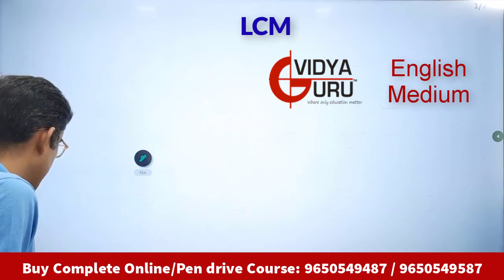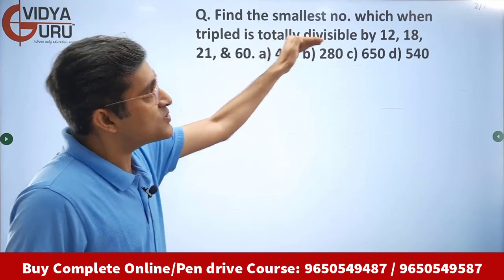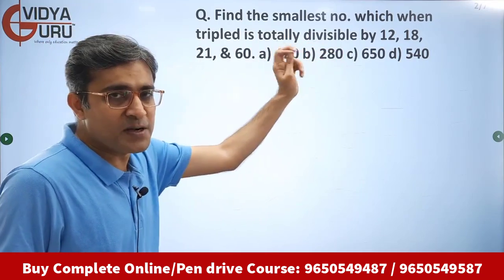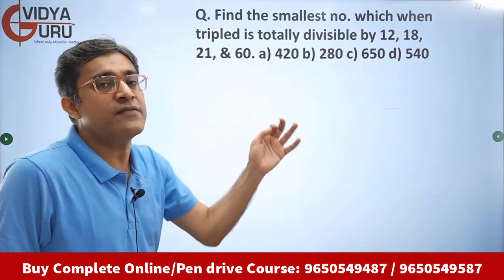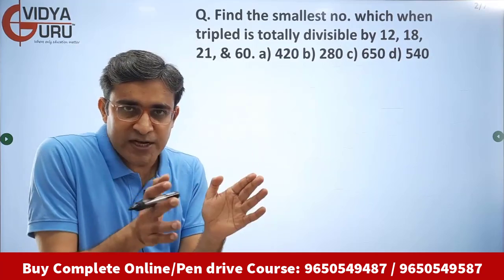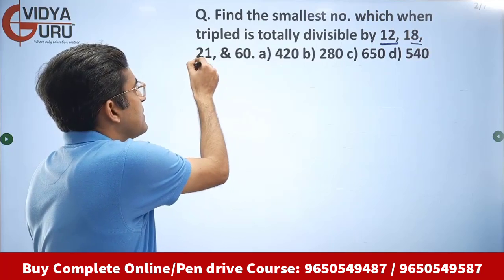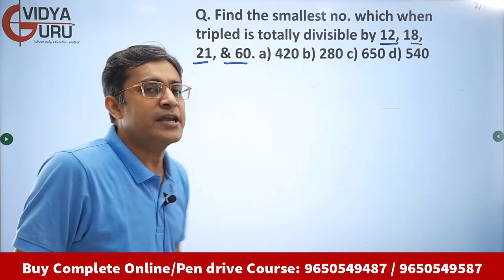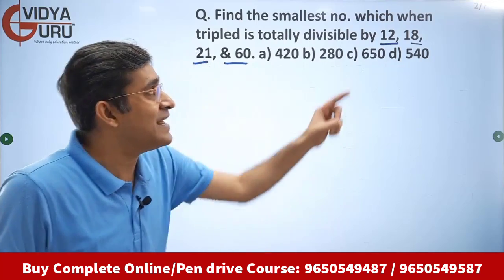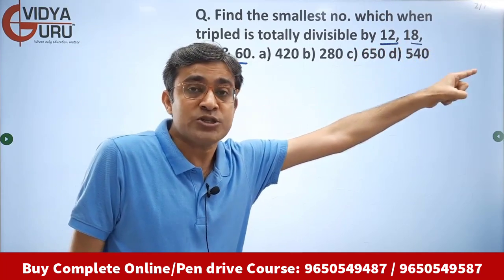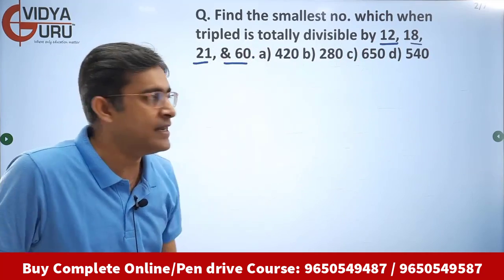Let's look at the first question. Find the smallest number which, when tripled — made three times — is totally divisible by 12, 18, 21 and 60. So first, we have to find a number completely divisible by 12, 18, 21 and 60. That means the number has to be the LCM — the lowest common multiple of 12, 18, 21 and 60.